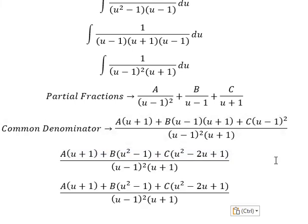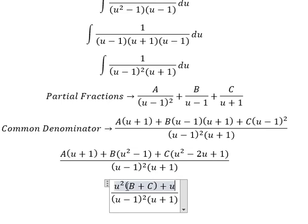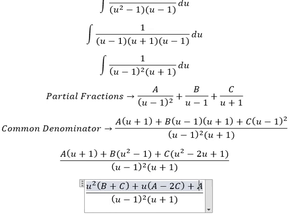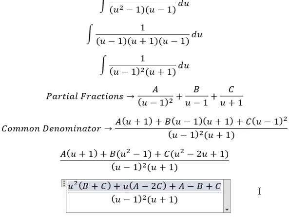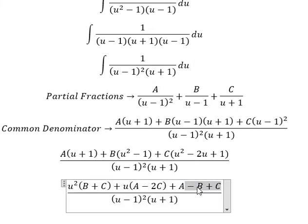We arrange based on the terms of u. For u squared, we have B plus C. For u, we have A minus 2C. For the constant term, we have A minus B plus C. Now we compare coefficients. We have only a constant of 1, so A minus B plus C equals 1. We don't have u or u squared terms, so B plus C equals 0 and A minus 2C equals 0. We create the system of equations.